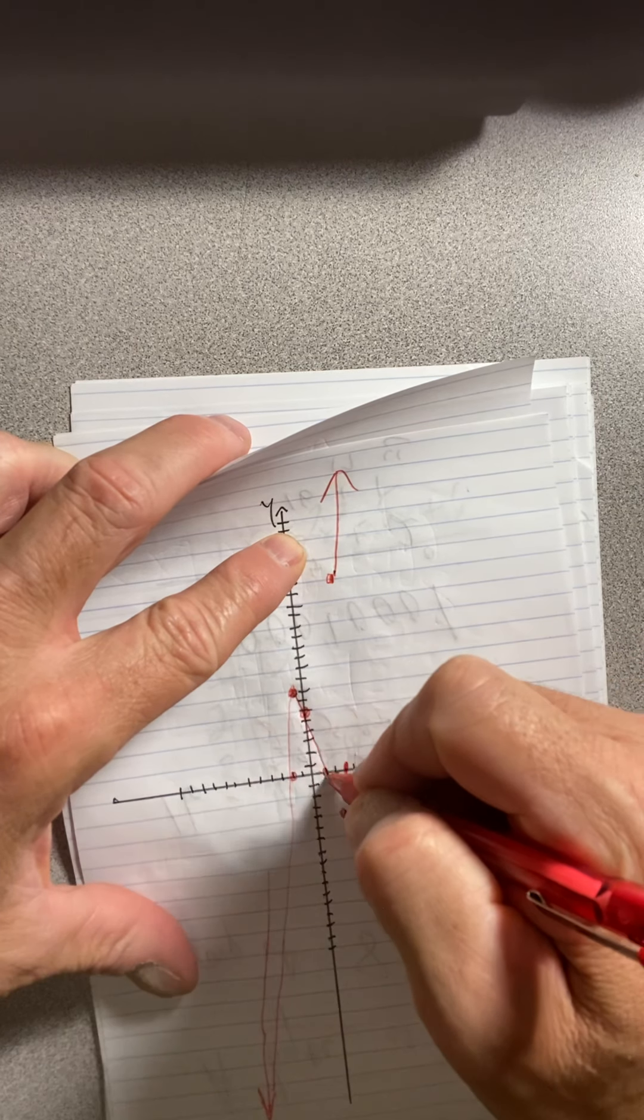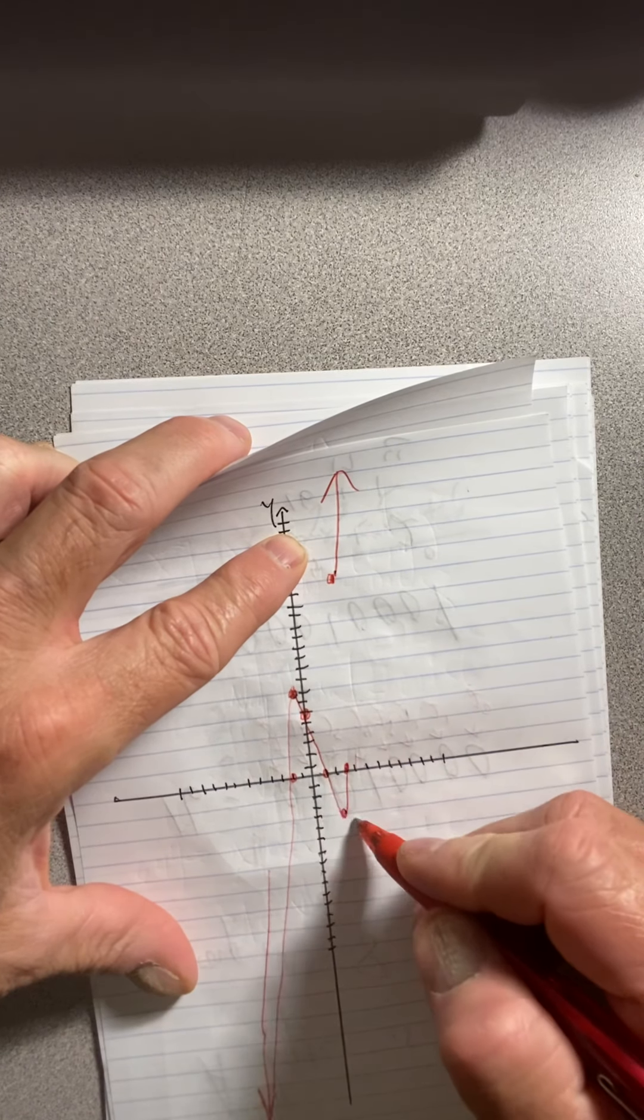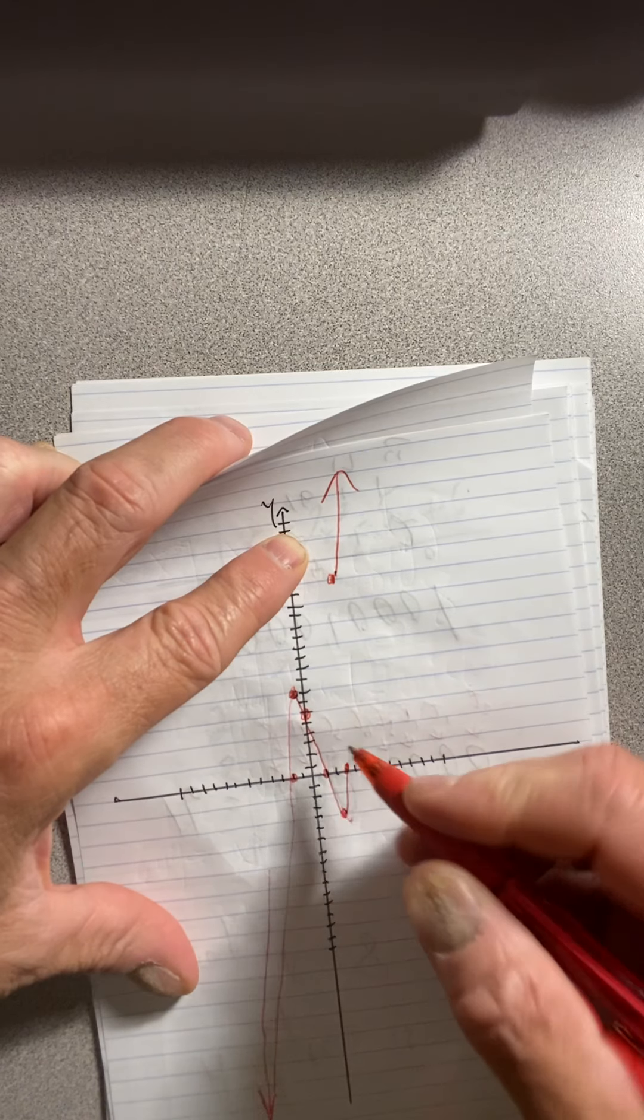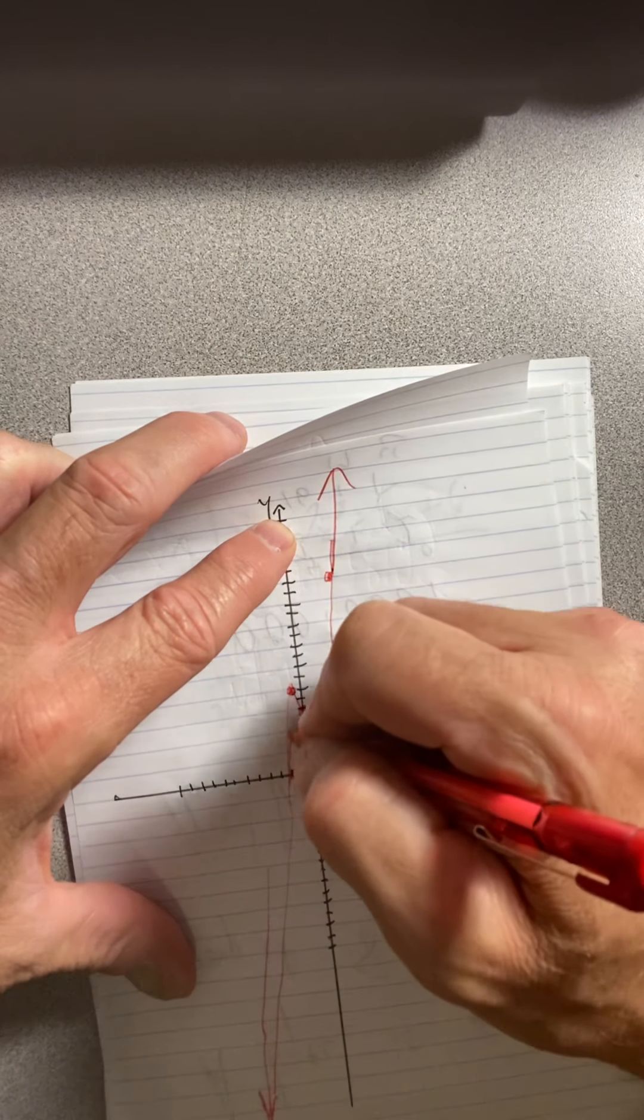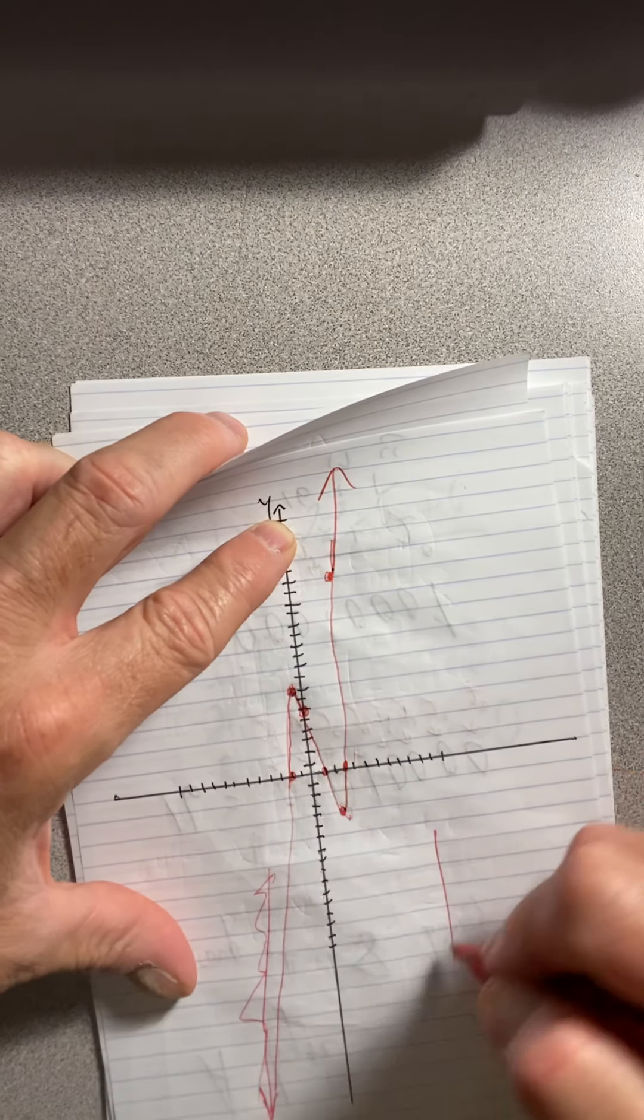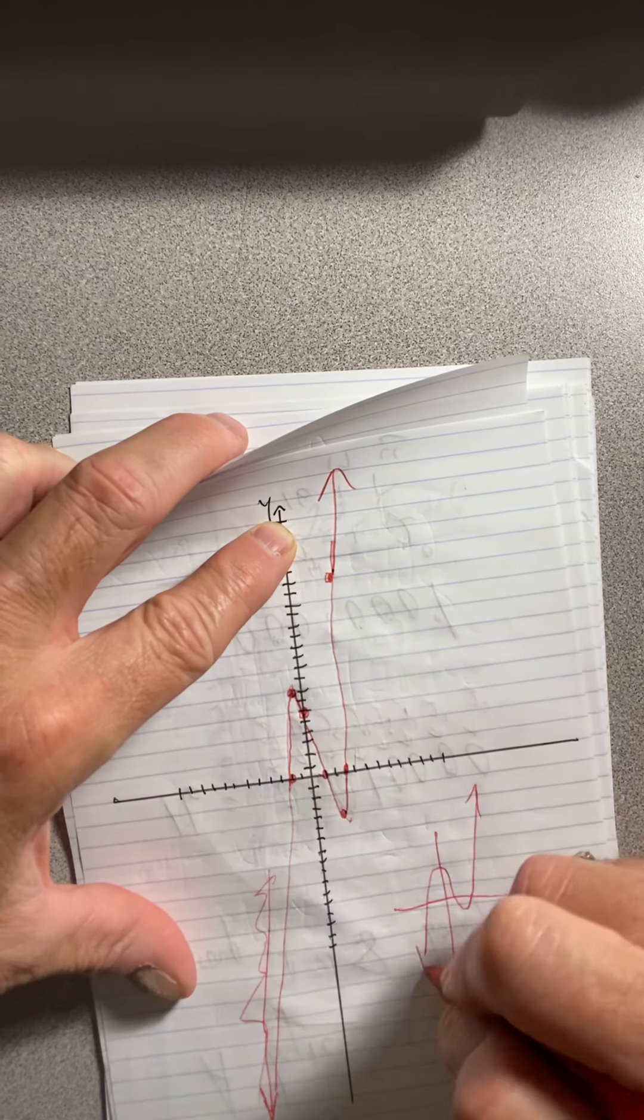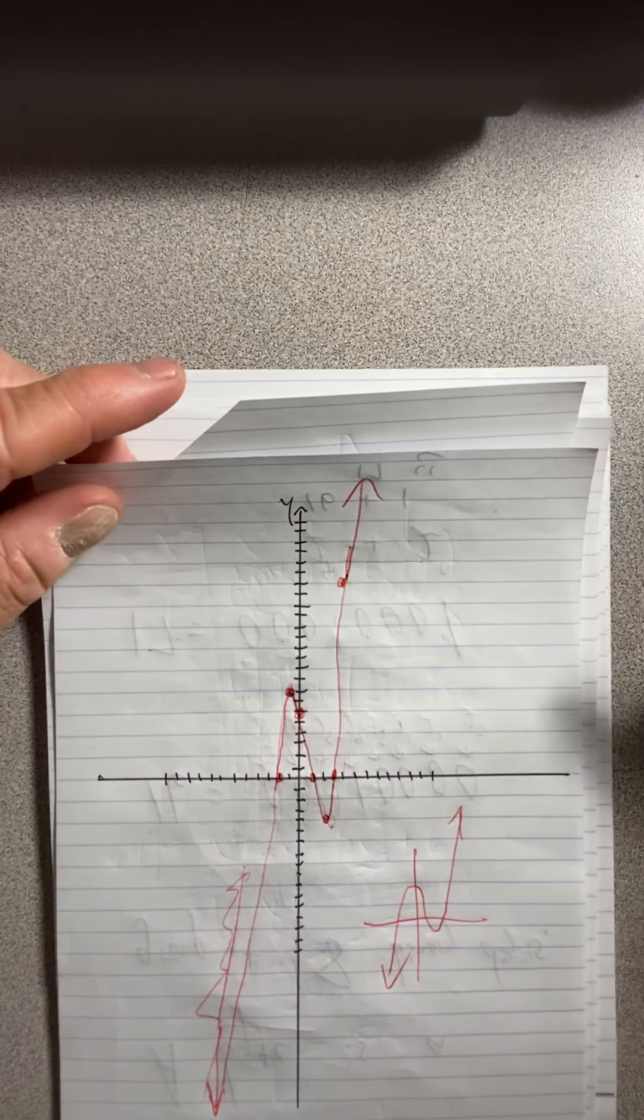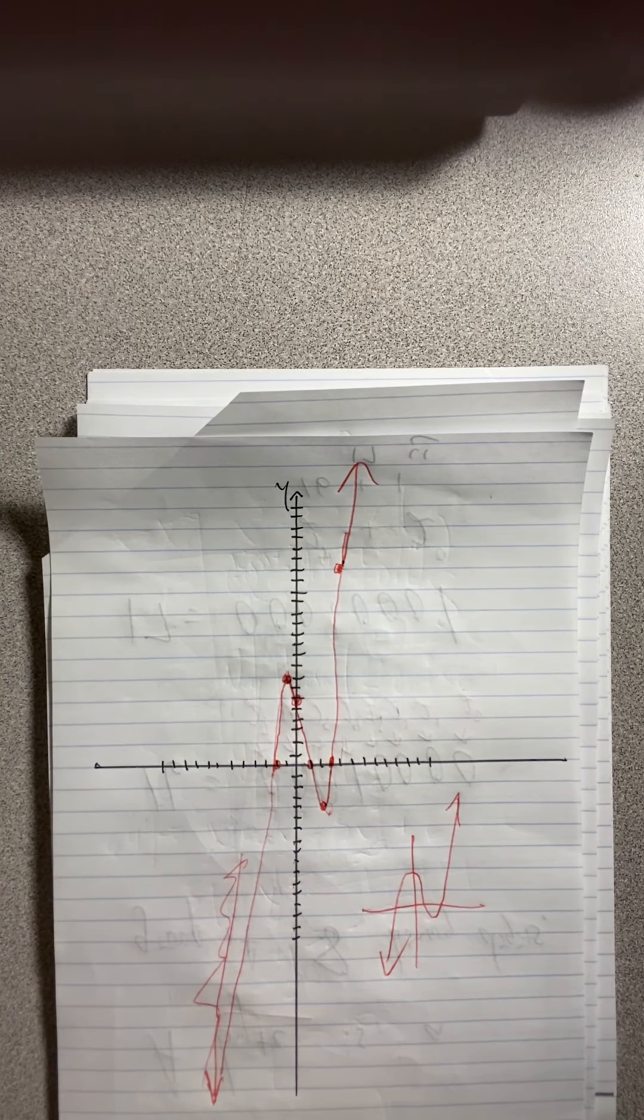Somewhere it turns around. I don't know where. I don't know that it's this point. It could turn around right here. I don't know where it turns around. But I think we can generally see that it's going to look something like this. So the graph is clearly something like that. That's what it looks like. And we did it with investigation.